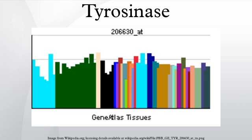Well-known tyrosinase inhibitors include kojic acid, tropolone, coumarins, vanillic acid, vanillin, and vanillic alcohol.